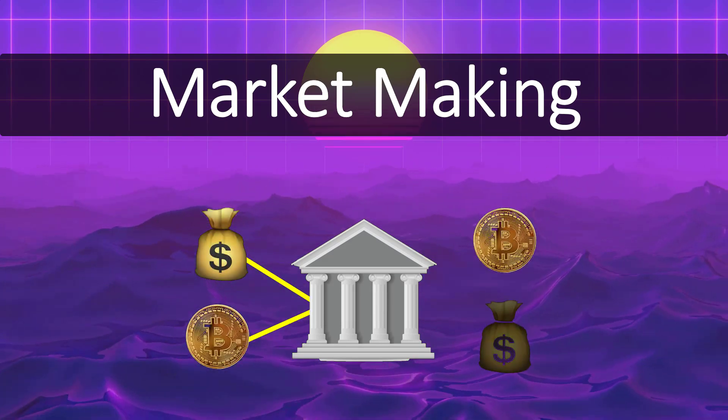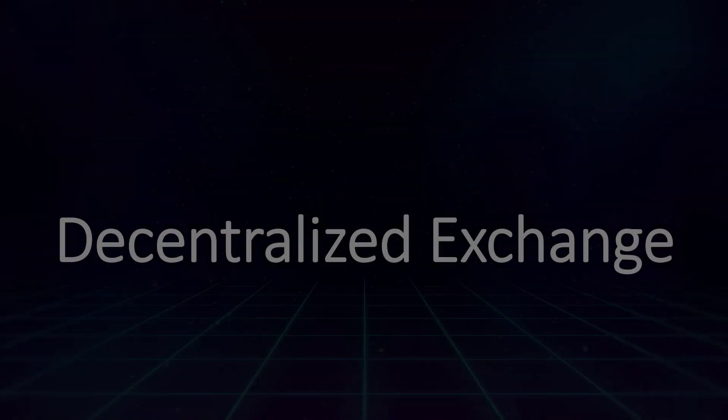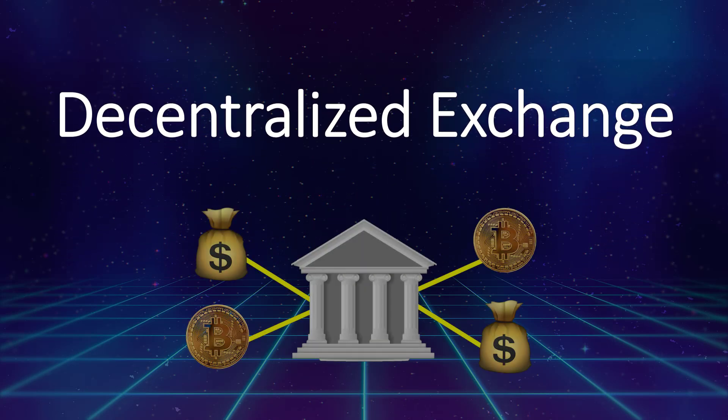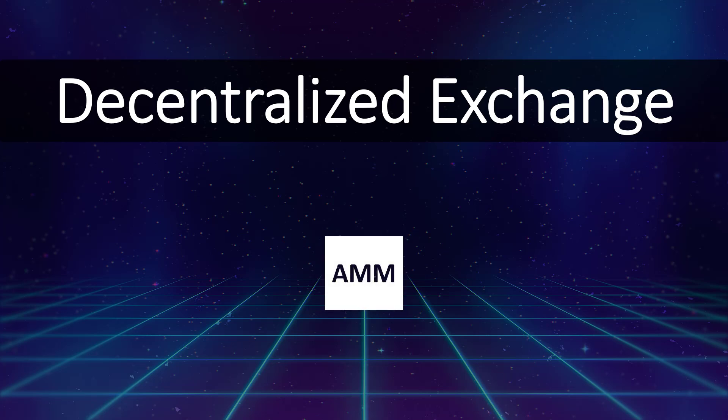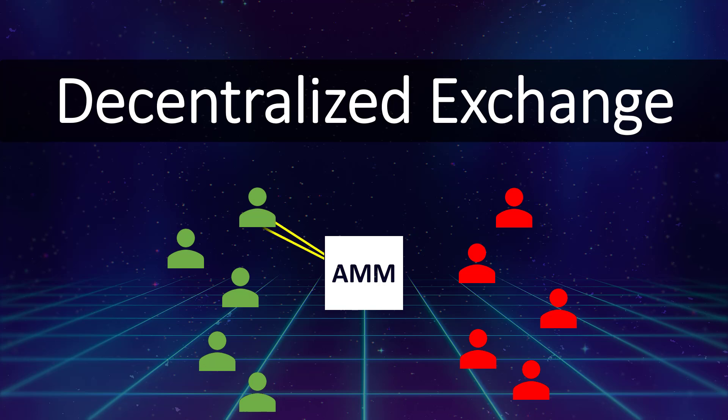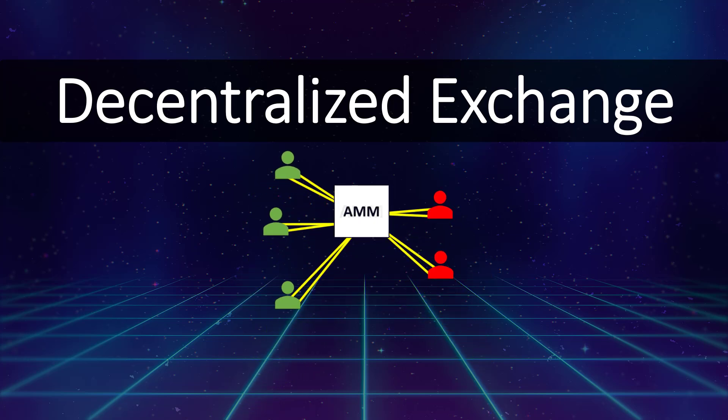A decentralized exchange, or DEX, aims to decentralize or remove the centralization factor of banks and exchanges from the crypto markets. In doing so, software called an automated market maker, or AMM, is run that allows for the buying and selling of tokens. But where do they get their money to buy assets? Or where do they get the assets to sell? From you. Voluntarily.